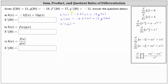And since f prime of 20 is equal to 17 and g prime of 20 is equal to negative 11, k prime of 20 is equal to negative eight times 17 plus 13 times negative 11. Simplifying, we have k prime of 20 is equal to negative 136 plus negative 143, which is equal to negative 279.